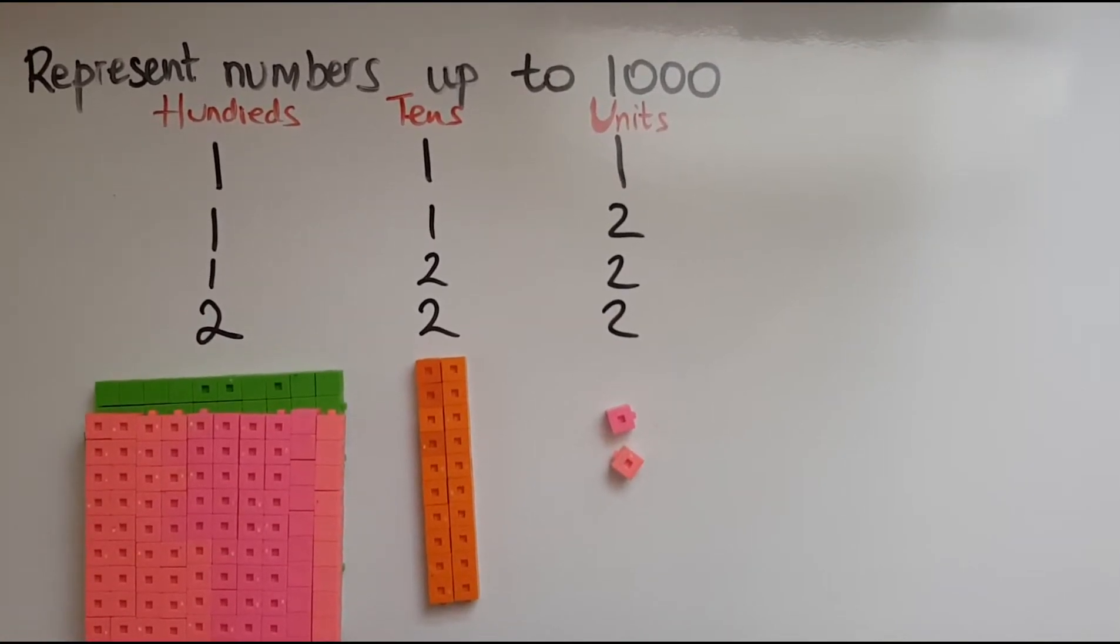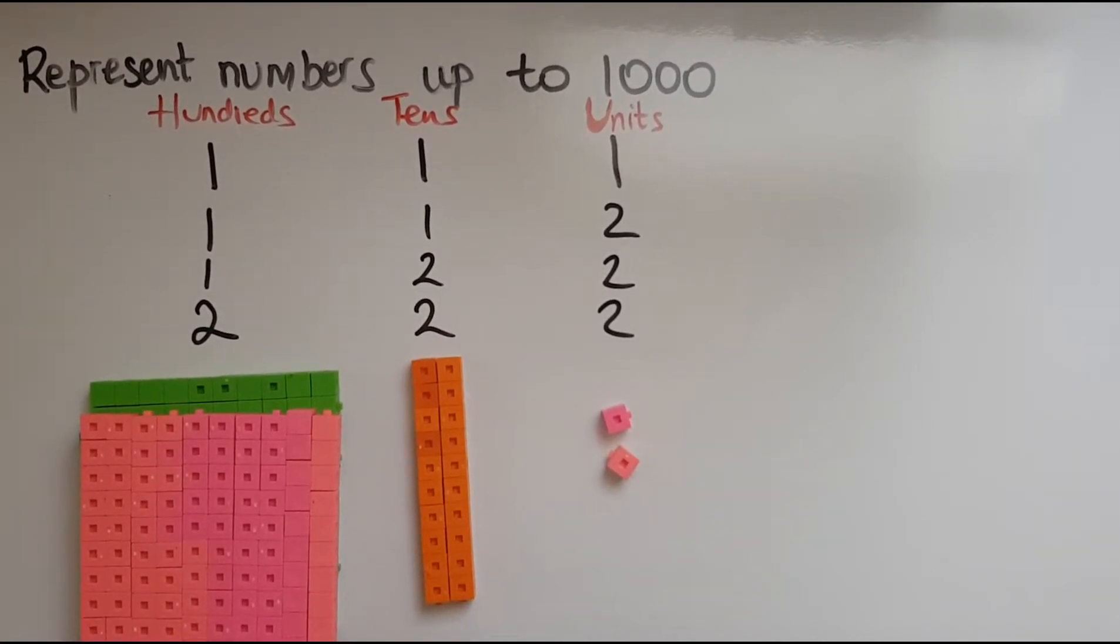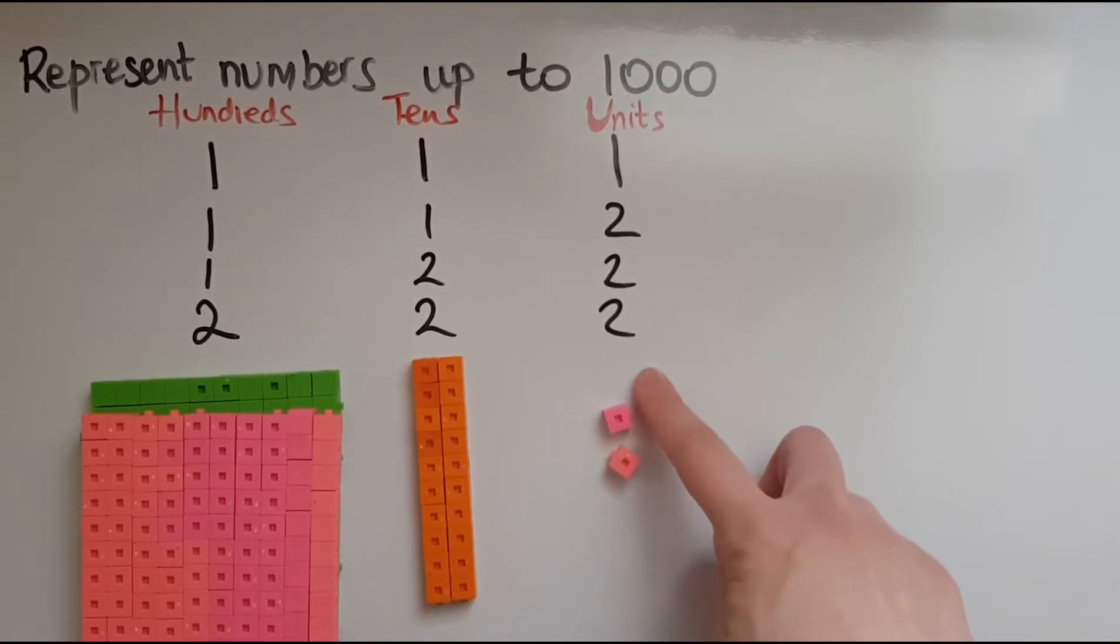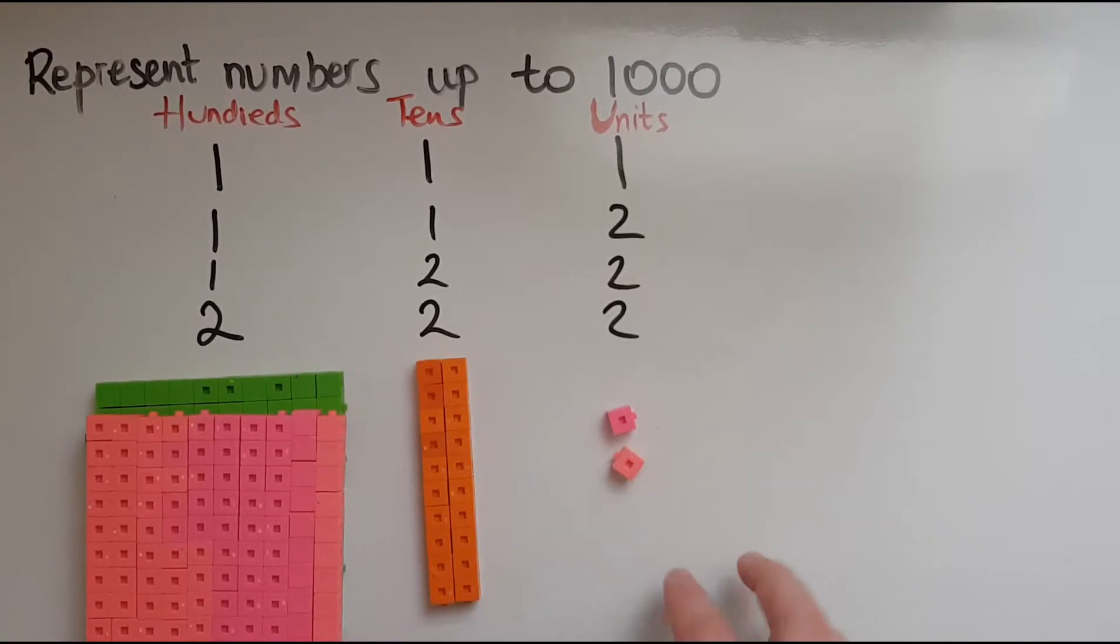So this represents 222. I could go on if I wanted to represent a bigger number then the digits would tell me how many of each I'd have, how many units, how many tens and how many hundreds.